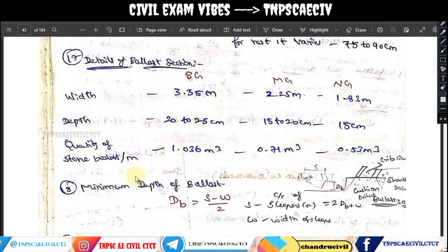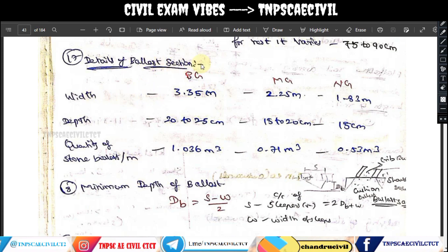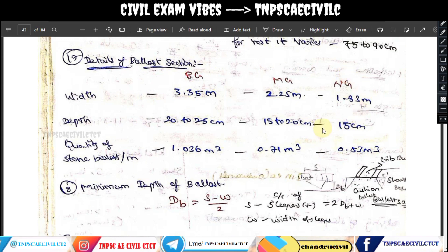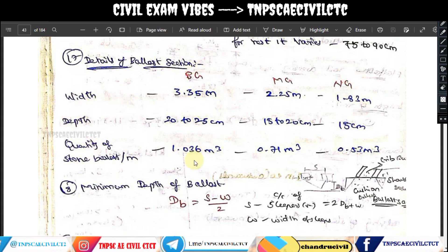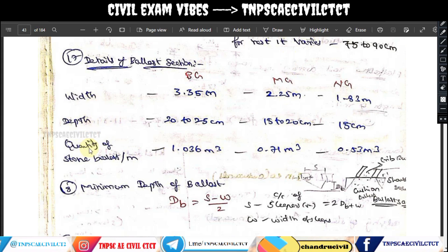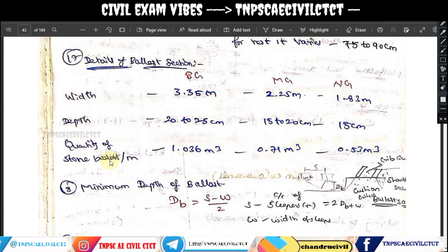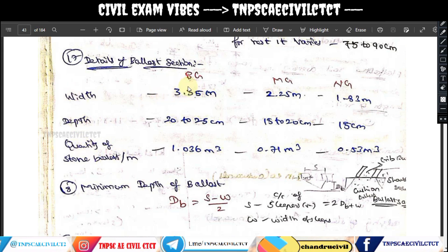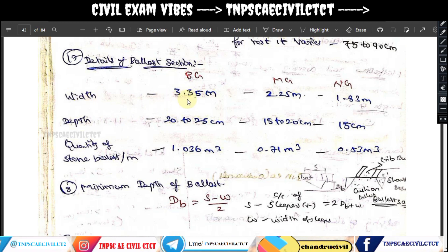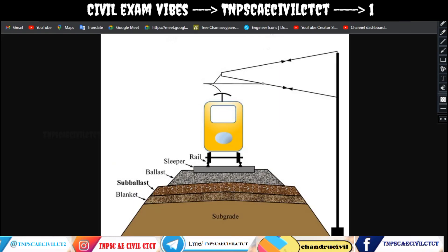In this video, we will show you the ballast section in detail — the ballast section for broad gauge and meter gauge, with the corresponding width and depth of stone ballast. First, let's look at the broad gauge. The total ballast section width is 3.35 m.